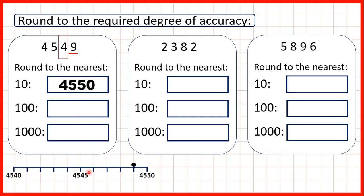Now, let's have a look at this number line, because this helps us to understand what we're really doing when we round to the nearest ten. If I were to keep on counting up in tens, I would eventually get to four thousand, five hundred and forty, and then the next multiple of ten would be four thousand, five hundred and fifty. Four thousand, five hundred and forty-nine is between these multiples of ten. When we round, what we're really asking is which multiple of ten is this number closest to? On a number line, we can see that it's closest to four thousand, five hundred and fifty, so that's why we round up.